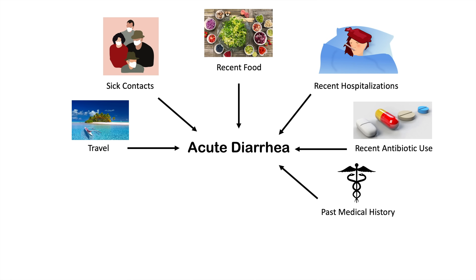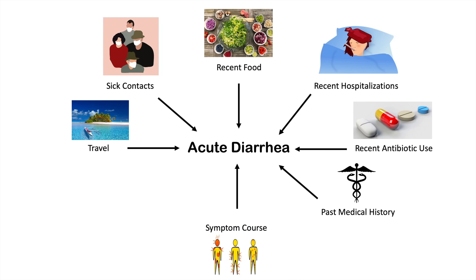We also ask about past medical history. Even though this is acute diarrhea, they might have irritable bowel syndrome and then eat certain foods, triggering an acute presentation that is really part of their chronic condition. Another important factor is the symptom course — how have the symptoms changed over time? Have they gotten better, worse, or stayed the same? This can help us delineate the cause of the acute diarrhea.